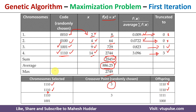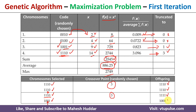Similarly, I have randomly selected two chromosomes for the crossover operator — this one first and then this one second. These two chromosomes undergo crossover with the crossover point again at 3, randomly selected. After the third point, the genes are exchanged. Once you exchange them, you get 1111 and 1000. These are the new chromosomes for the next iteration.